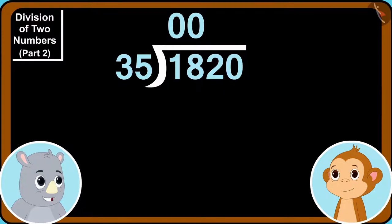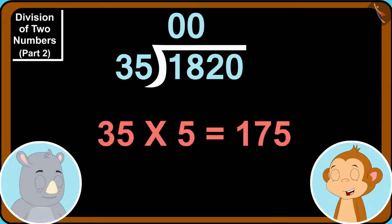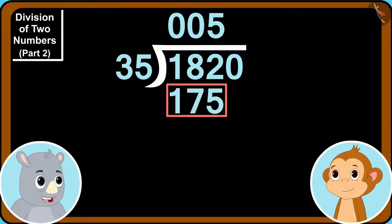Now can we divide 182 by 35? Yes. 35 times 5 is 175. All right. So, we will write 5 here and 175 down here.